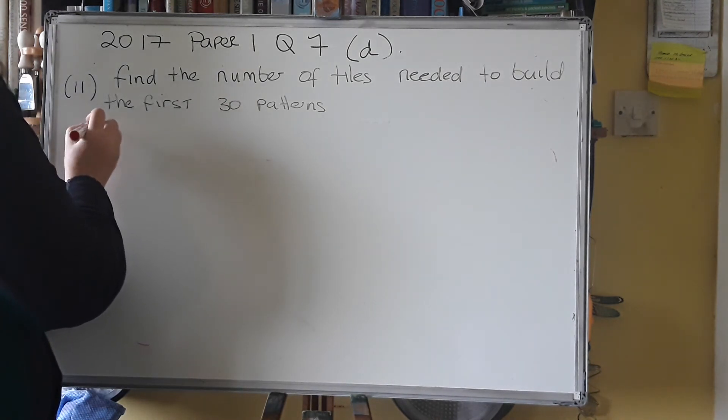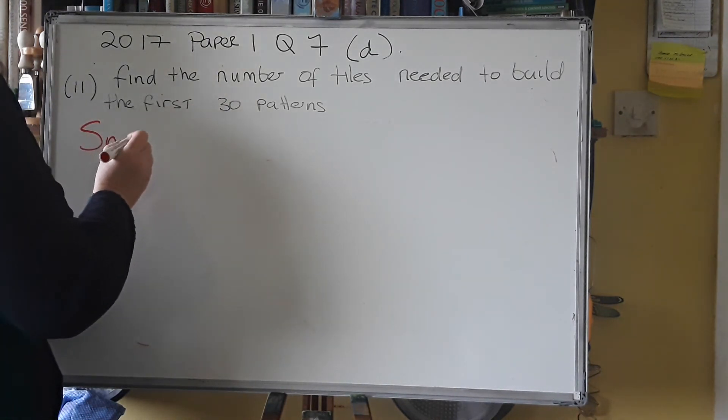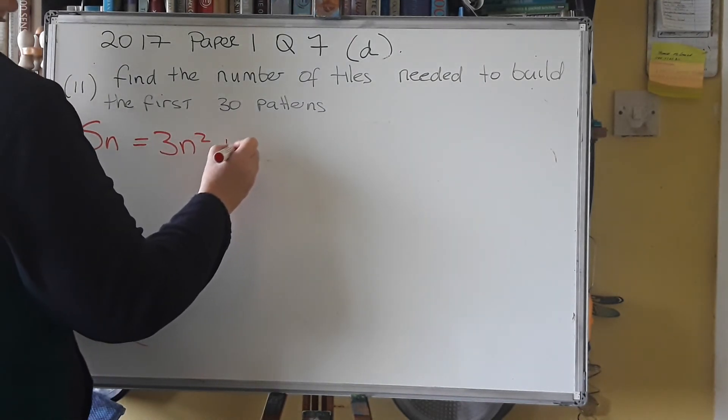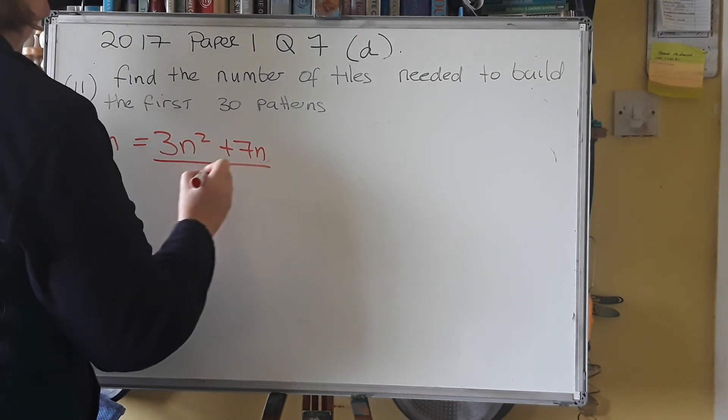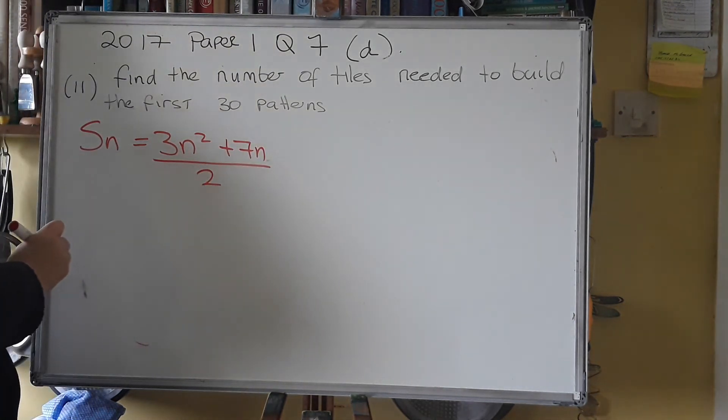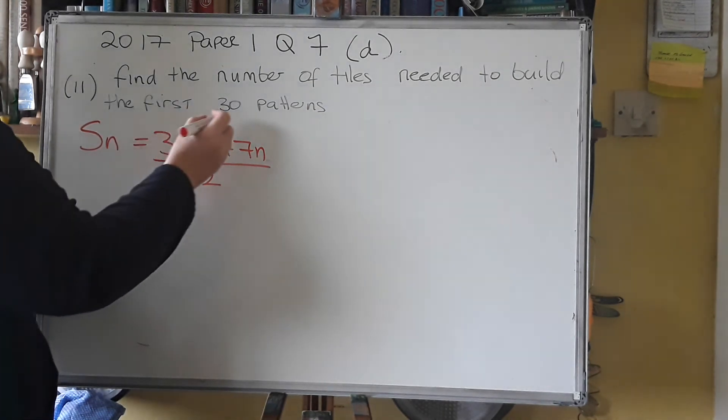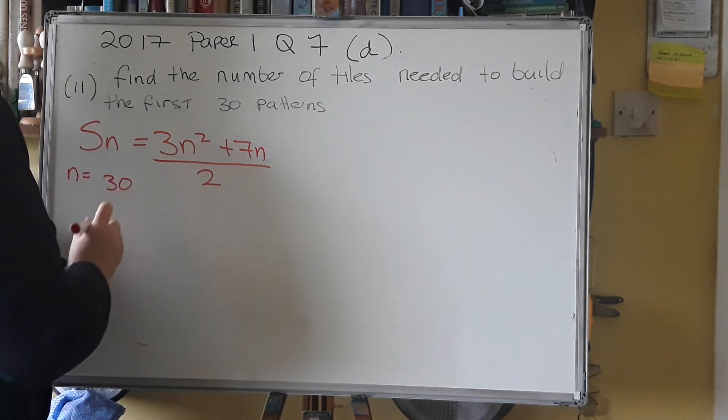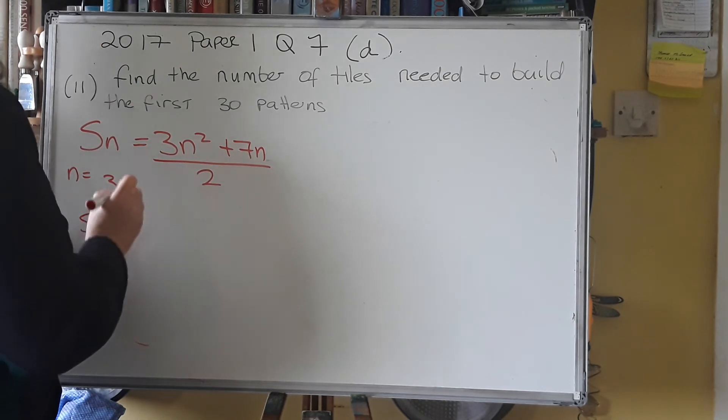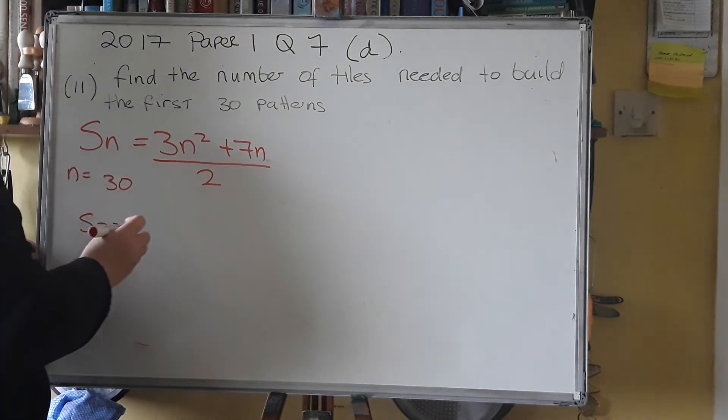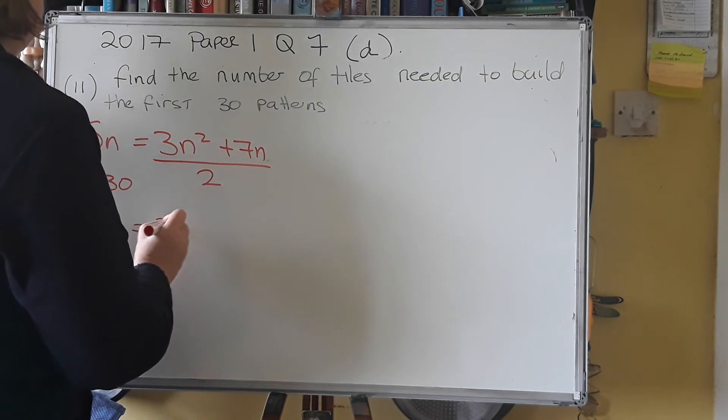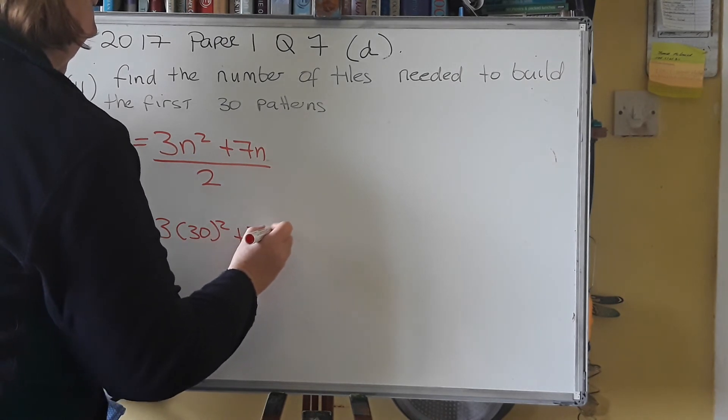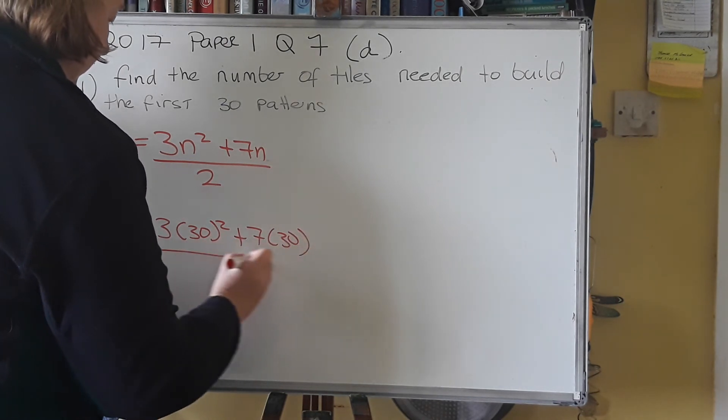So, we know that Sn is 3n squared plus 7n all over 2. We know that from the previous thing that we've done. Now, you're looking for the first 30 patterns. So you're looking for when n is 30. So, S30. We're going to put 30 in everywhere we have n. Is 3 times 30 squared plus 7 times 30 all over 2.